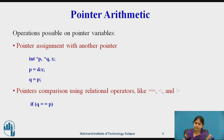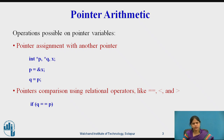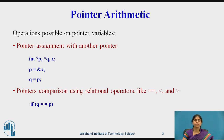Pointers of the same type can be compared using relational operators such as equal to (==), less than, and greater than. For example, if p and q are integer pointers, we can have a comparison: if q == p, it checks whether the values stored inside p and q are the same.